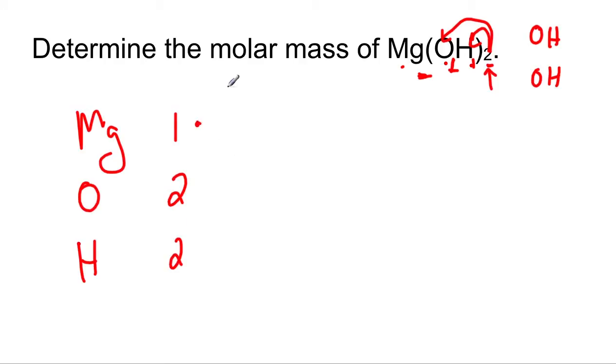The next thing you do is look on the periodic table. You have to look up the mass of one mole of each element. If you look at the atomic mass, it's 24.3 grams for magnesium, 16.0 grams for oxygen, and 1.0 grams for hydrogen.